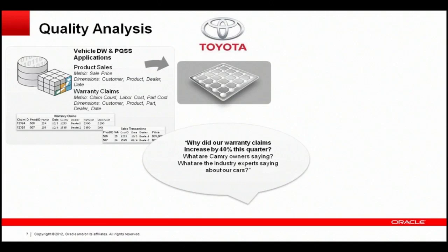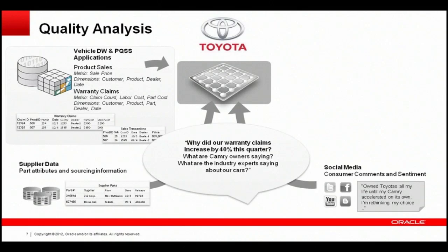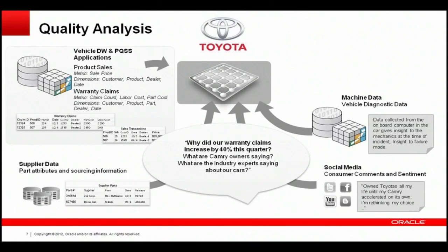We helped Toyota combine data from a multitude of disparate sources. We started with information in their vehicle data warehouse and production quality applications — systems capturing data across the manufacturing floor, their in-house warranty claim systems, and more. To do an effective analysis, they also needed supplier data, which was configured in systems outside of their production quality systems — part attribute data, sourcing information — kept in a completely separate environment. Toyota also needed to understand what customers were saying, so we helped collect and analyze consumer comments and sentiment from across the web.